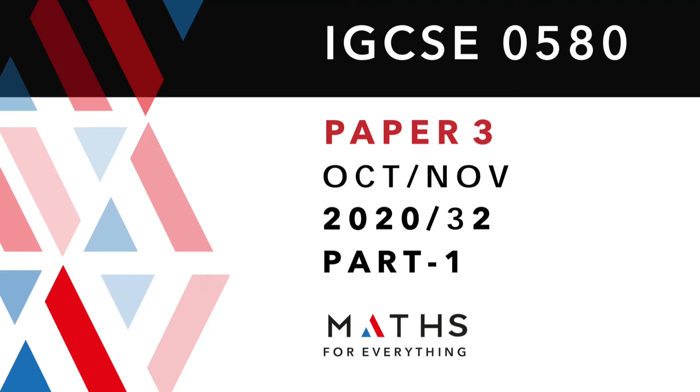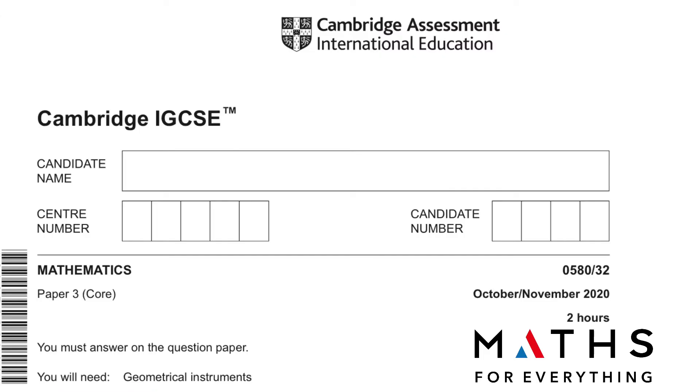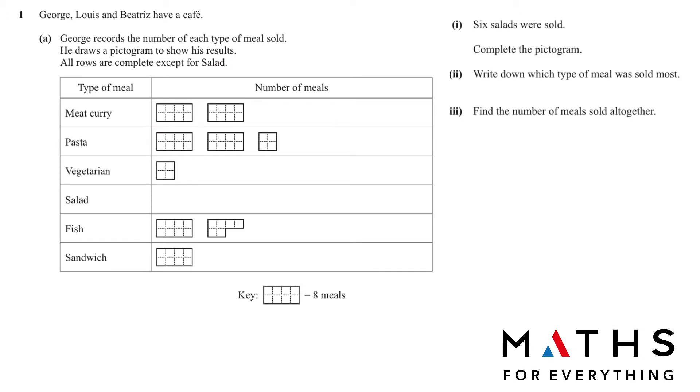Assalamu alaikum, welcome to my channel. Before we begin, do subscribe to the channel. In this video we are going to solve Cambridge IGCSE Mathematics Paper 3 Core 0580 variant 32, October November 2020, part one, question number one.